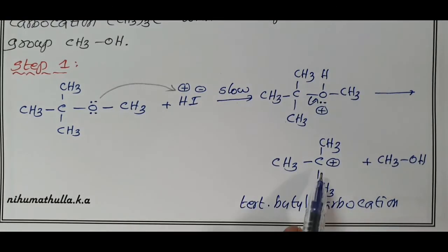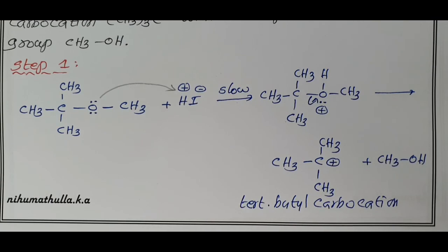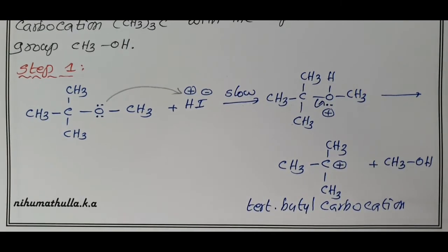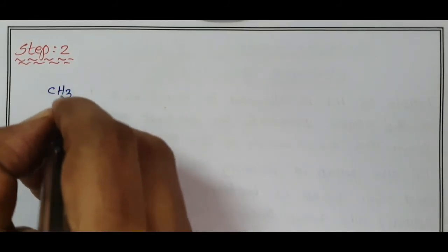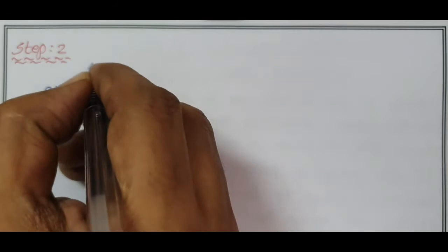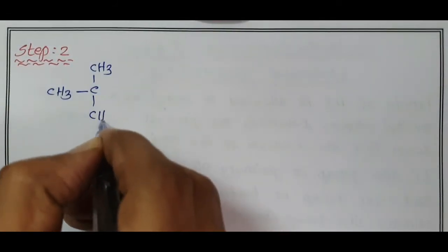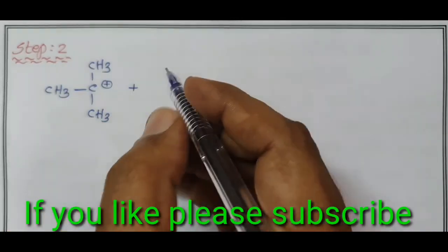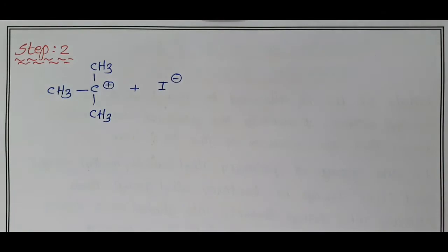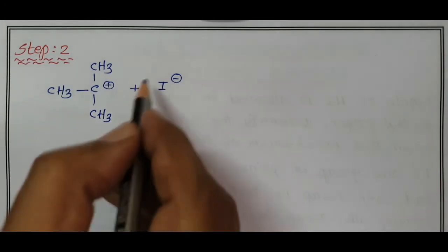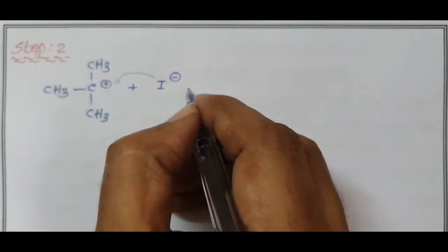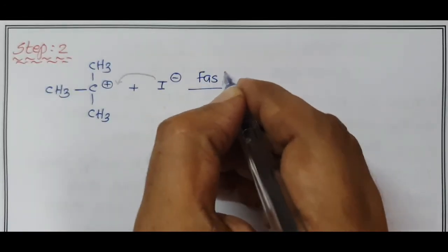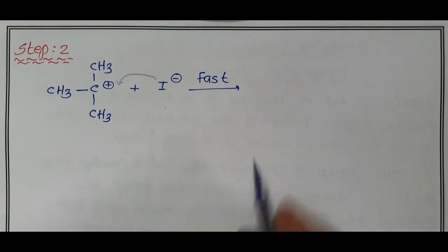Then, the I minus attacks in the second step. Carbocation gives tertiary butyl alkyl halide. The tertiary butyl carbocation, CH3-C-CH3-CH3, there is a positive charge on this carbon atom. This carbon is SP2 hybridized. In step 2, the nucleophile I minus attacks the carbocation and it is a fast step. First step is a slow step. Second step is a fast step.